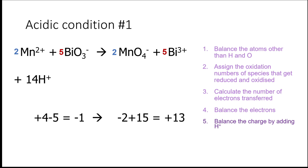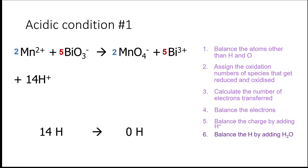The sixth step is to balance the hydrogen by adding water. On the left-hand side we have 14 hydrogen, and on the right-hand side we have zero. So we need 7 water molecules as the final touch.